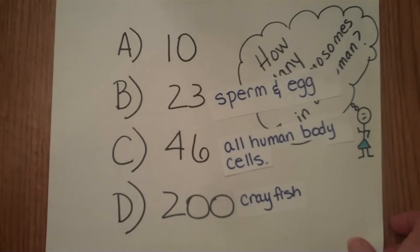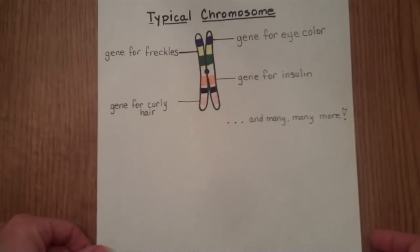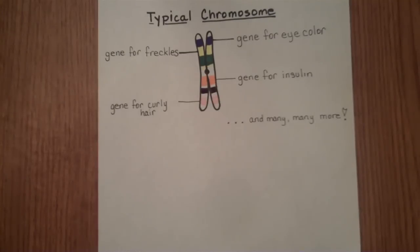Chromosomes made of DNA contain segments called genes. The typical chromosome has genes for everything that the organism needs. In humans, we have genes for freckles, genes for eye color, insulin, a gene for curly hair, and many, many more. There are over 20,000 genes in the human genome, and a complete count is still being researched. Human chromosomes have genes for everything that the human organism needs to be successful, survive, and grow.